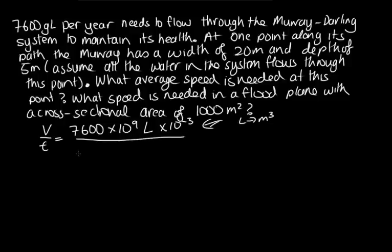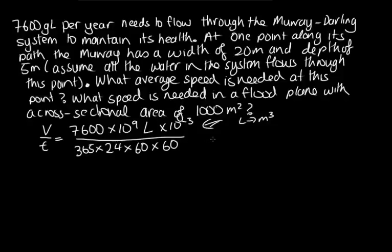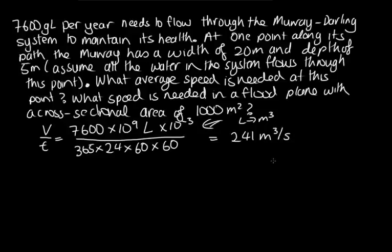In a year there's 365 days, in a day there is 24 hours, in an hour there's 60 minutes, and in a minute there's 60 seconds. So this is going to give us the flow rate in metres cubed per second. Entering this into the calculator, we get 241 metres cubed per second as the flow rate.